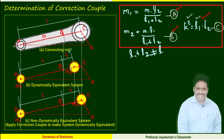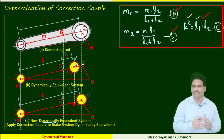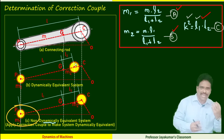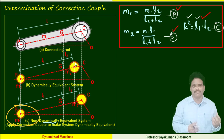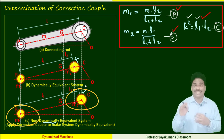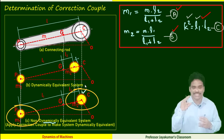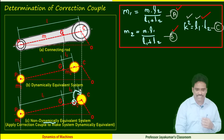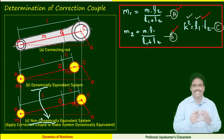That means mass M2 will not be acting at the crank end; it will be acting somewhere inside. But while solving the problem, we prefer to have two equivalent masses at both ends of the connecting rod — M1 at the smaller end or gudgeon pin end, and M2 at the crank end or bigger end of the connecting rod. So we are shifting the mass from its original position to the crank end. When you shift it, the system becomes dynamically non-equivalent, which creates a problem.